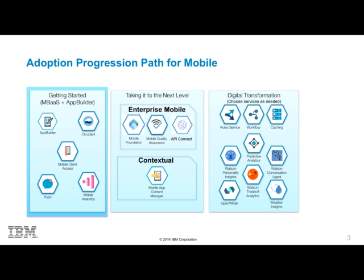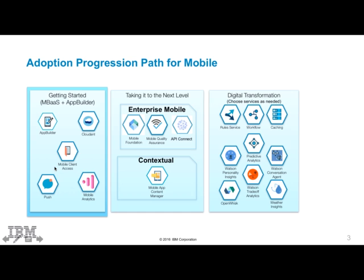When you are getting started with mobile application development, the Bluemix mobile services of interest include: the Mobile App Builder, which allows you to visually design your mobile app by simple drag and drop; the Cloudant service, which is a NoSQL database as a service offering; Mobile Client Access, which allows you to secure your mobile application; Push Notification service, which allows you to notify your end users; and Mobile Analytics service, which provides insight into your mobile app. For enterprise mobile application development, the services of interest are Mobile Foundation, Mobile Quality Assurance, and Mobile App Content Manager.